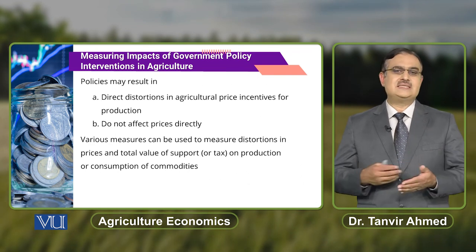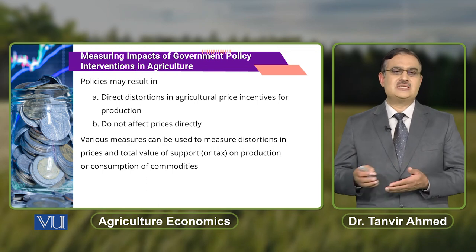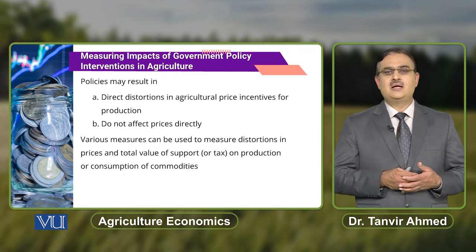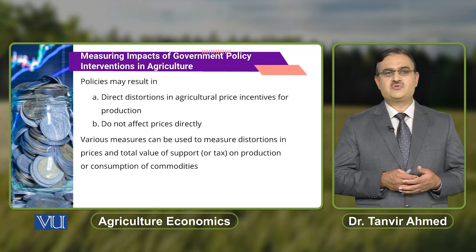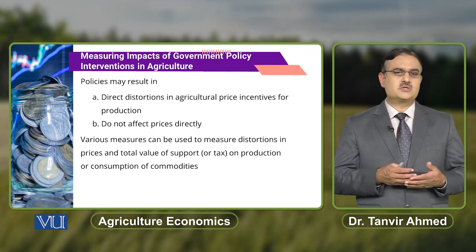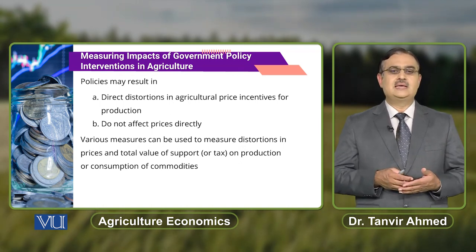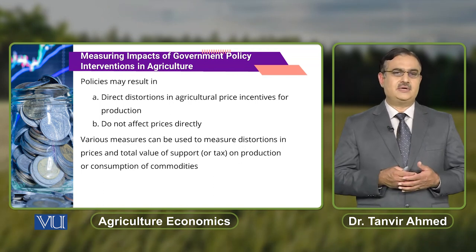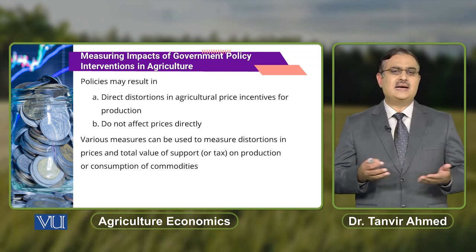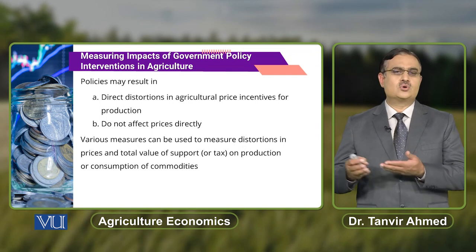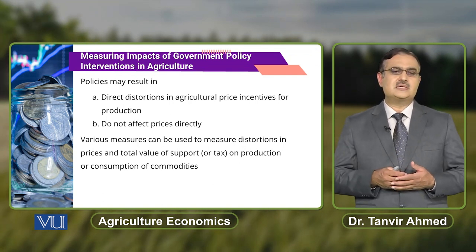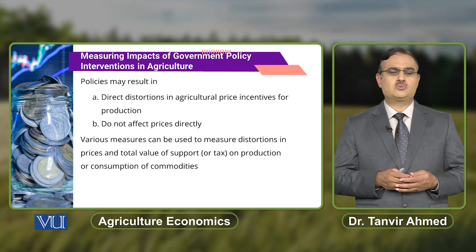These government policies may result in direct distortions in the agricultural price incentives for production. It is also possible that some policies may not affect prices directly — for example, direct taxes do not have a direct effect on the prices of agricultural commodities.